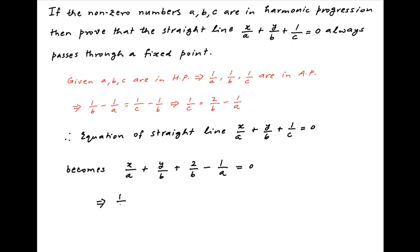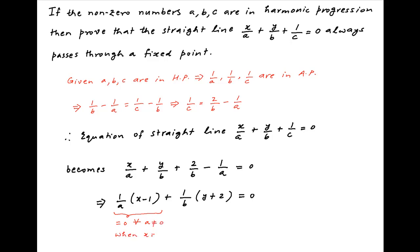This can be rewritten as (1/a)(x minus 1) + (1/b)(y plus 2) equals 0. Now the first term on the left-hand side equals 0 for all non-zero values of a when x equals 1, and the second term equals 0 for all non-zero values of b when y equals minus 2.